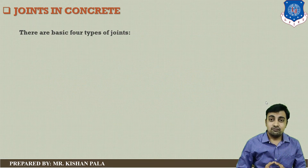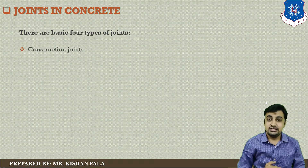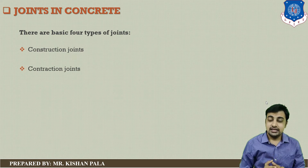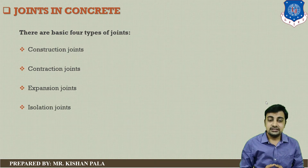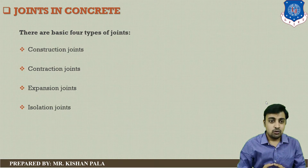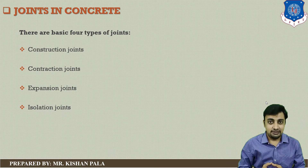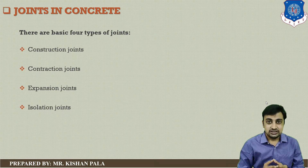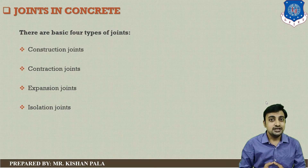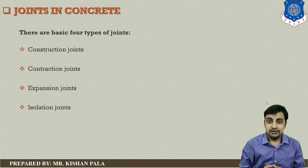There are basically four types of joints. The first one is construction joints, the second one is contraction joints, the third one is expansion joints, and the fourth one is isolation joints. These four types of basic joints are used in construction elements, selected depending upon the situation and resistivity to the different stresses present at your existing site.